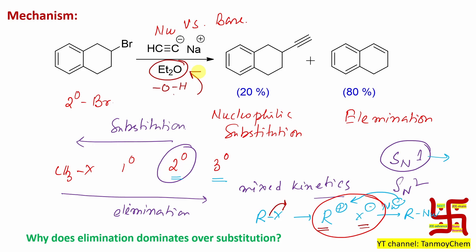Regarding the nature of the acetylide nucleophile: it is a needle-shaped nucleophile — a good nucleophile. It is also a stronger base because it is a carbanion. So from both points it is strong, but the issue is with this substrate. That's why mixed kinetics takes place.